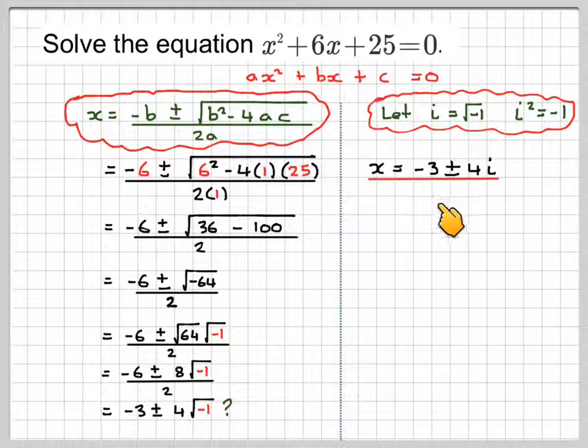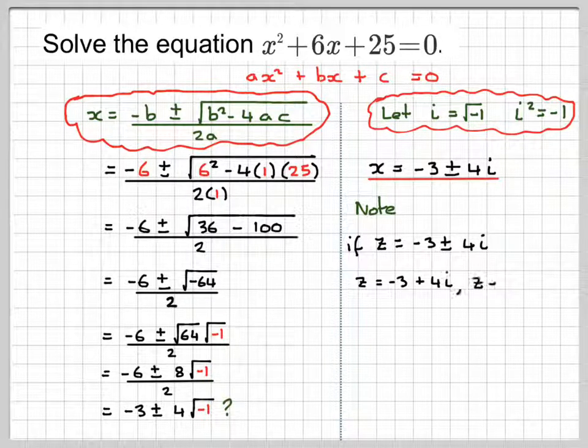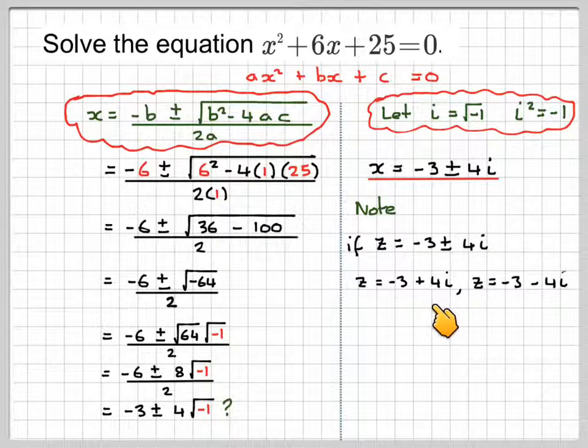And this is a complex number, or two complex numbers, because minus 3 plus 4i and minus 3 minus 4i. So some things to think about here. Note, if z equals, now we usually use z when we talk about solving an equation for complex numbers. So this will be z squared plus 6z. But for the moment, if z equals minus 3 plus or minus 4i, then z will be equal to minus 3 plus 4i, or z is equal to minus 3 minus 4i.